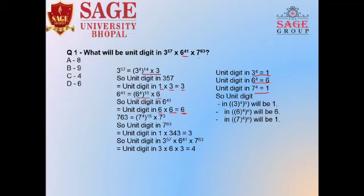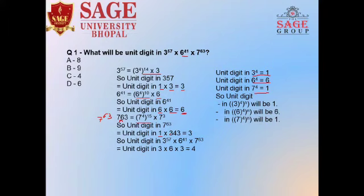The last term is 7 to the power 63. Dividing 63 by 4: 15 into 4 is 60, so only 3 is the remainder. So the expression is 7 to the power 4, to the power 15, into 7 to the power 3. The value of 7 to the power 4 is 1, and the remaining term is 7 to the power 3, whose product is 343, and the unit digit is 3. So 1 into 3 is 3.